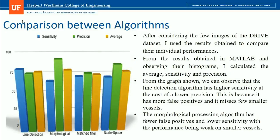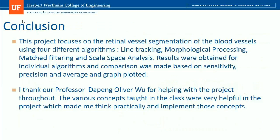After implementing all four algorithms, their quality was compared by calculating sensitivity, precision, and average using MATLAB. From the graph, the line detection algorithm has higher sensitivity at the cost of lower precision, because it has more false positives and misses fewer smaller vessels. The morphological processing algorithm has fewer false positives and lower sensitivity, with weaker performance on smaller vessels.